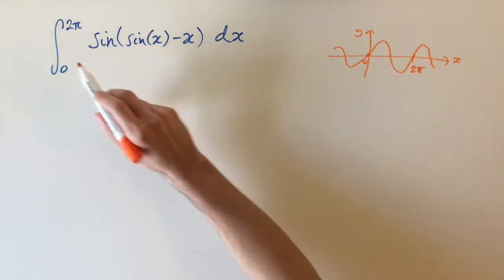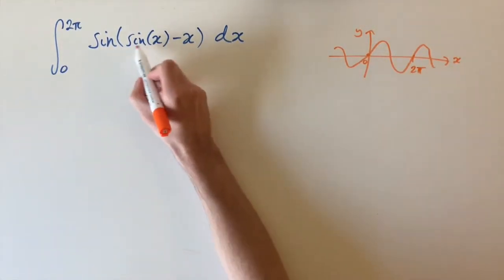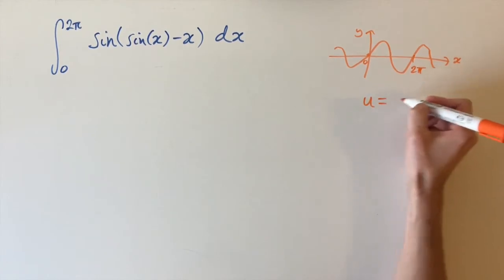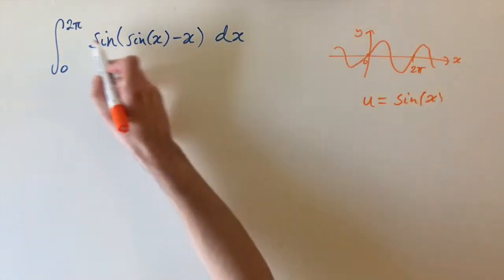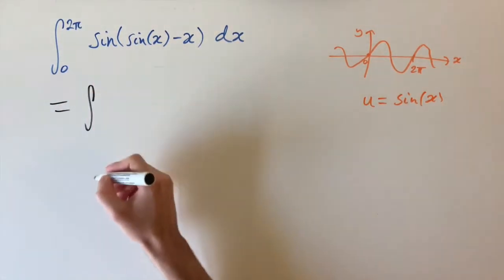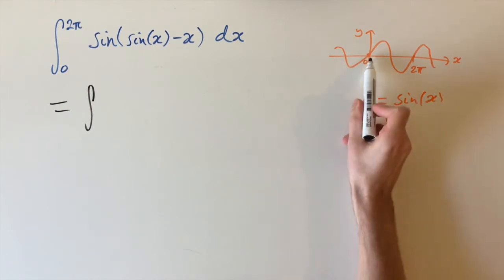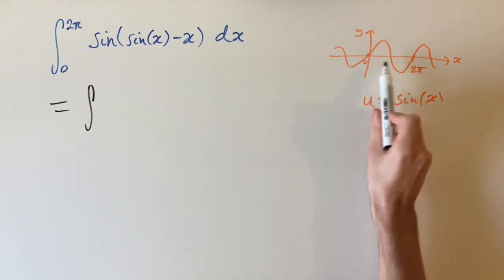This is going to give us a hint of how to approach this problem, because if we use a substitution of u = sin(x), then the new limits are going to help us. And this is because the new limits are going to turn into, if we just put 0 and 2π into this formula...